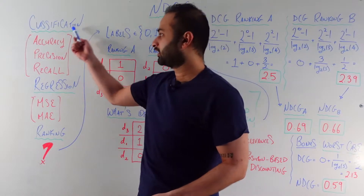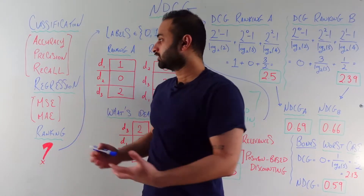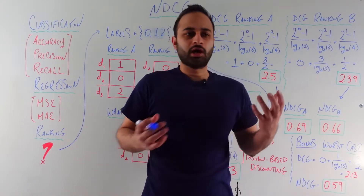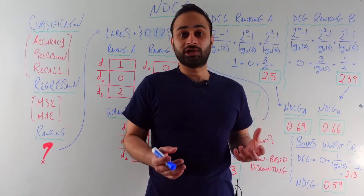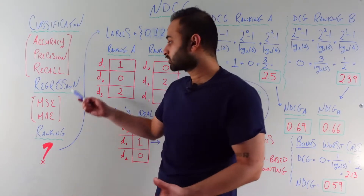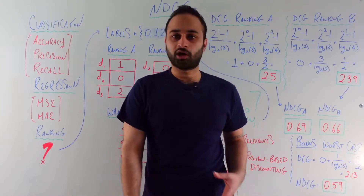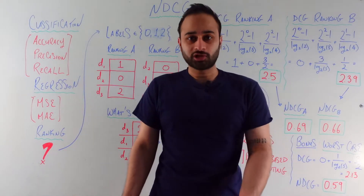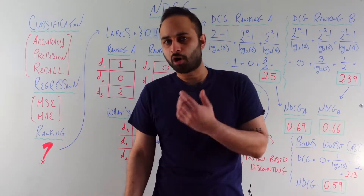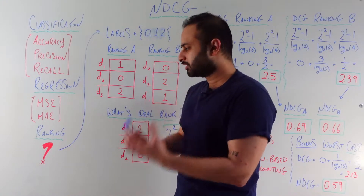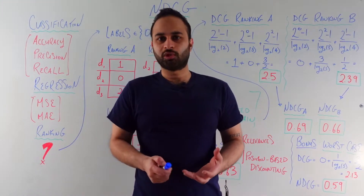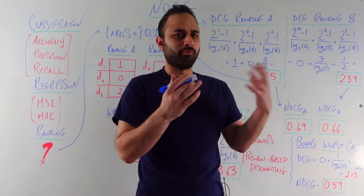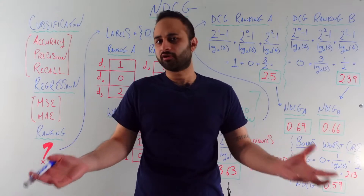For example, in classification, just to name a few, we have accuracy, precision, and recall, which all do different things and imply different things, but at the end of the day they're metrics we can use for classification problems. For regression problems we have things like mean squared error, mean absolute error, and other things as well. So that begs the question now that we're talking about ranking models and methods — what are the metrics we're going to use to judge whether a ranking the model gives us is in some sense good or bad, or if we have two rankings, which one's better than the other?